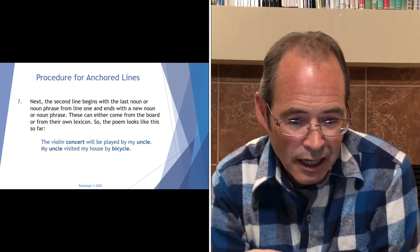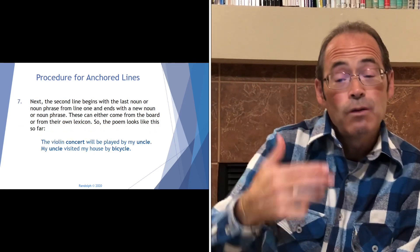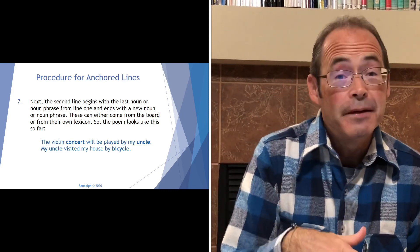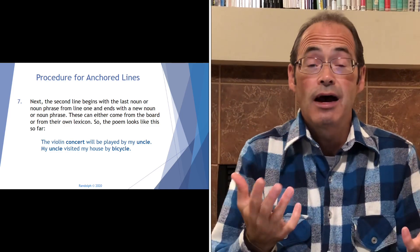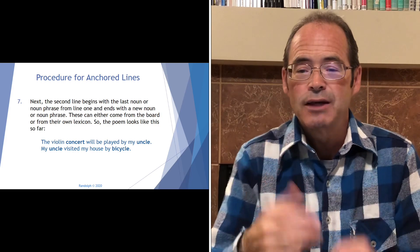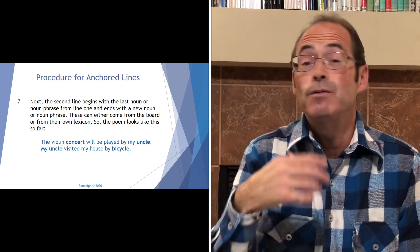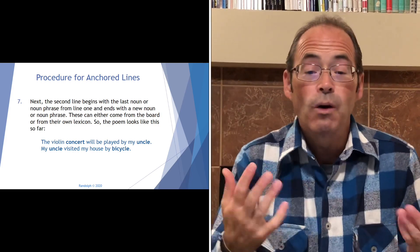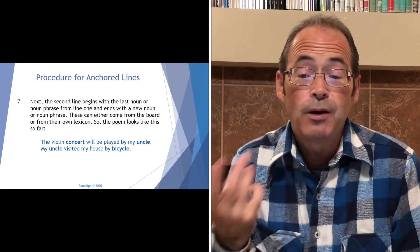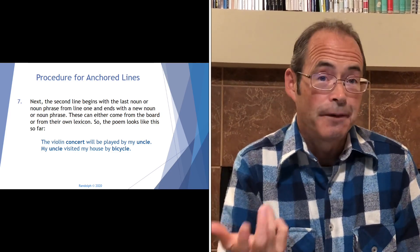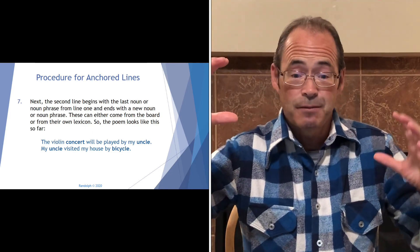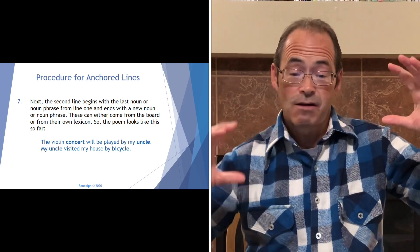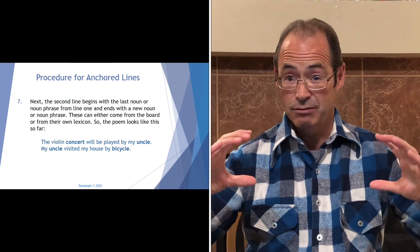The second line begins with the last noun or noun phrase from line one and ends with a new noun or noun phrase. These can either come from the board list we made or from their own lexicon. So the poem looks like this so far: 'The violin concert will be played by my uncle. / My uncle visited my house by bicycle.' You can see how each noun or noun phrase is the anchor for the next line.